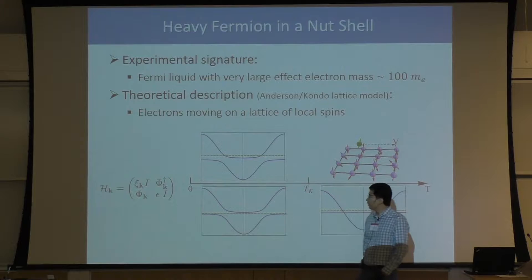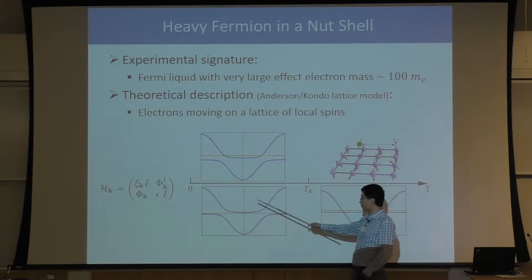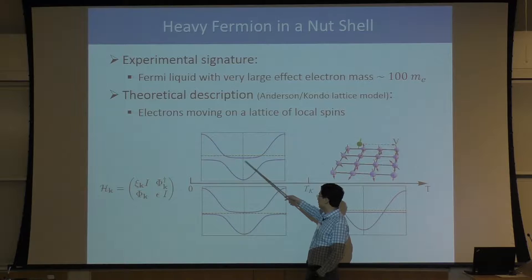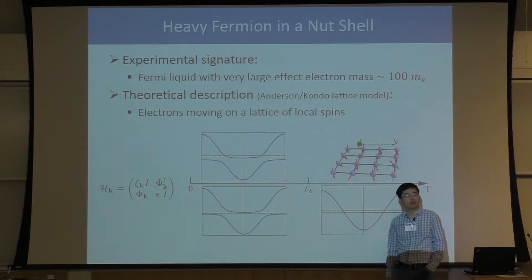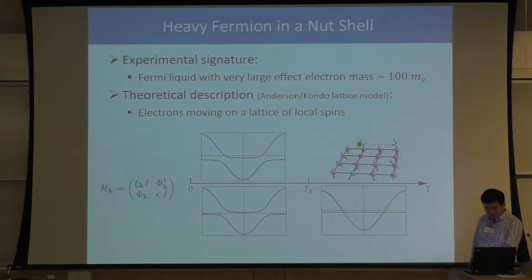From this picture, we can already easily understand why electrons are so heavy here. If we look at the bottom part of the conduction band, it is very, very flat. If you want to fit a flat curve using k² over 2m, this m needs to be very, very large. That's why electrons are so heavy in these systems.